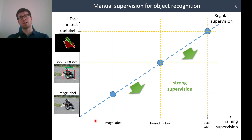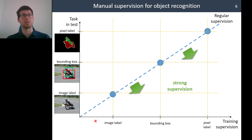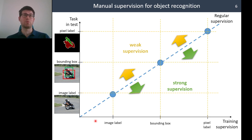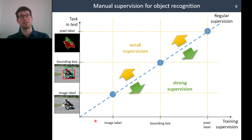Below this dashed line is strong supervision — when we have more detailed annotations during training than required at test time. Our tutorial focuses on the upper part of this dashed line: when we have less detailed annotations at train time than what is required at test time.